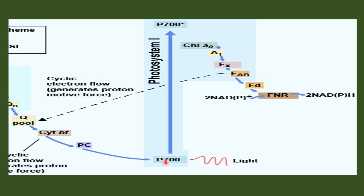As the electrons travel in a cyclic path — originating from P700 and again reaching P700 — this process is called cyclic photophosphorylation. Only one photosystem is involved in cyclic photophosphorylation, and ATP is generated at the region of cytochrome B6.